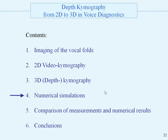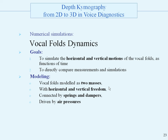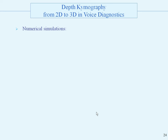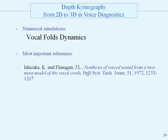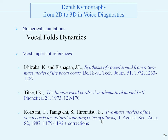Now let's go to numerical simulations. The goals are to simulate the horizontal and vertical motions and to compare the measurements and simulations. We modeled the vocal folds as two masses — left and right, top and bottom — with horizontal and vertical freedom, connected by springs and dampers, and driven by air pressures. We simulate coordinates, pressures, and flows. The most important references are the first models by Ishizaka and Flanagan from 1972, then Titze with the two-mass vocal fold mathematical model, and Koizumi in 1987.